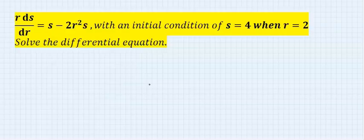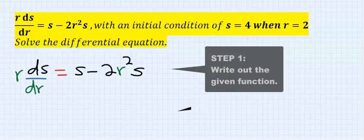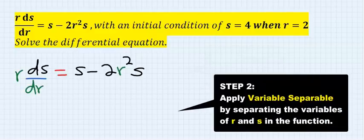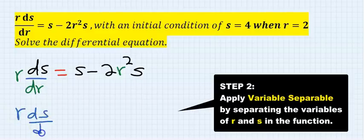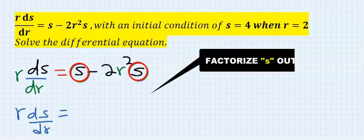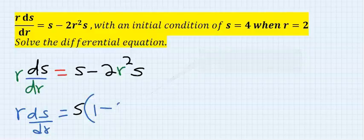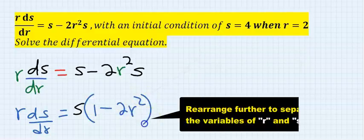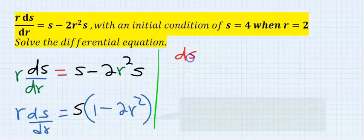Solve the given differential equation. Step number two: separate the variables. Here r, ds over dr is on this side, s is here, s is here. I will bring s out, then I will have 1 minus 2r squared.